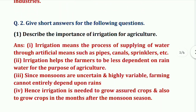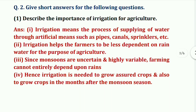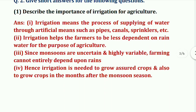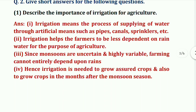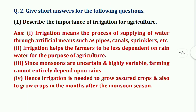Moving to the second section: short answer questions. First one — describe the importance of irrigation for agriculture. The answer is: irrigation means the process of supplying water through artificial means such as pipes, canals, sprinklers, etc. Irrigation helps farmers to be less dependent on rainwater for the purpose of agriculture.